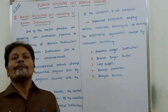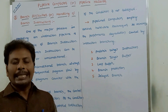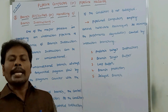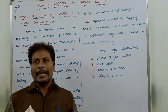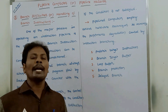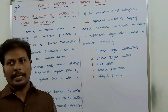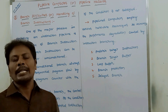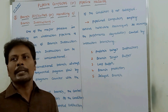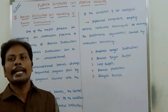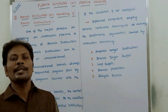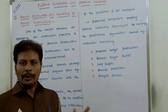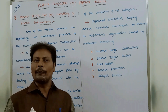The third type of difficulty that occurs in the instruction pipeline is branch difficulty. In this video, we will discuss how to avoid branch difficulties when they occur.